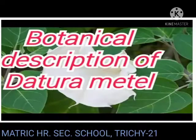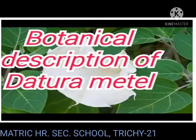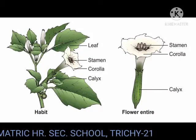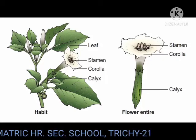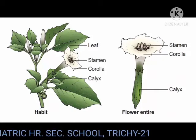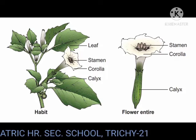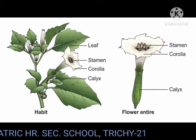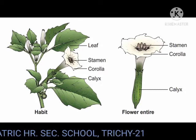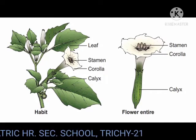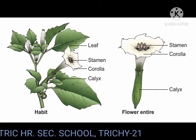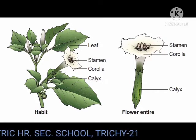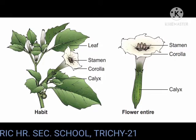Botanical description of Datura metel. Habitat: large, erect, and stout herb. Root: branched taproot system. Stem: stem is hollow, green, and herbaceous, with strong odour — odour means smell.